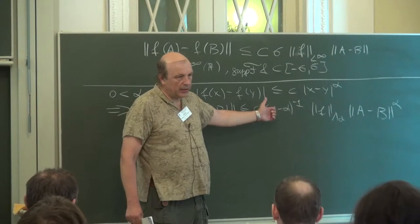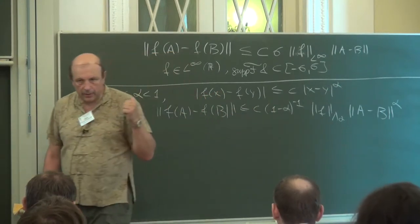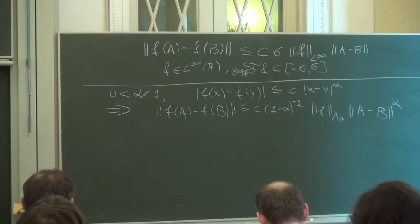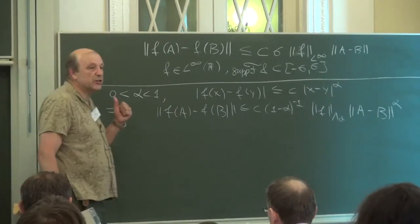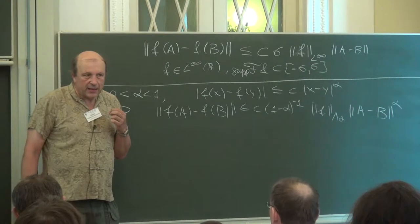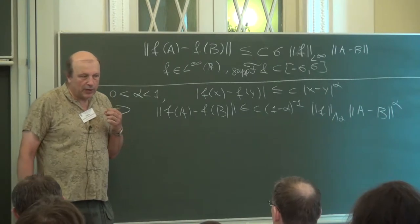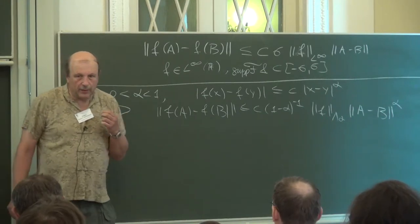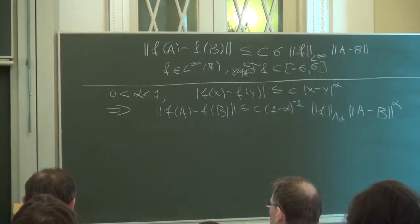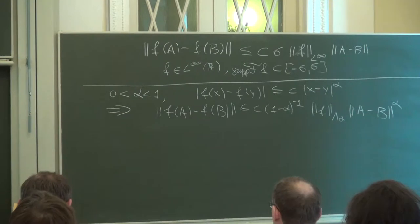If alpha approaches 0 then the constant remains bounded, but if alpha approaches 1 then the constant goes to infinity, which is natural because otherwise we would have the fact that a Lipschitz function is operator Lipschitz, which we know is wrong.